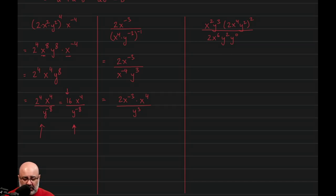And now for the 2x's on top, because they're being multiplied and the bases are the same, I can add the exponents. So negative 3 plus the 4 would give us 2x, or 2x to the 1, which is really just 2x, over y to the third. And that would be correct.